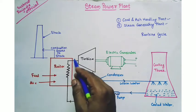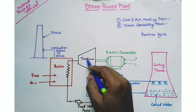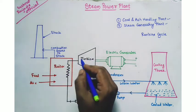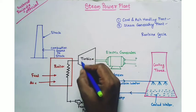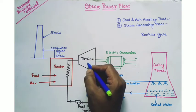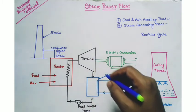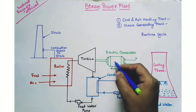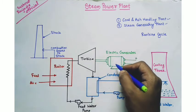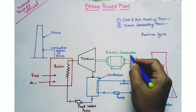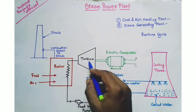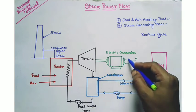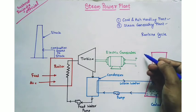That steam is then provided to the turbine. The steam produced by the boiler is superheated steam, and that superheated steam is provided to the steam turbine. The steam turbine produces mechanical energy, which is then converted into electrical energy with the help of an electrical generator, because the steam turbine drives the electrical generator.